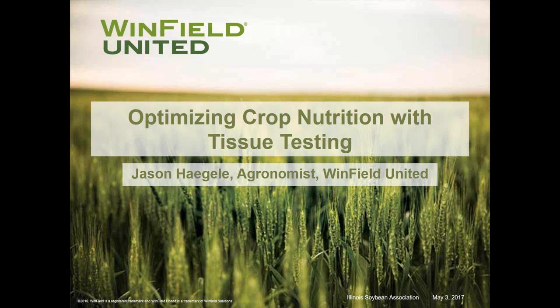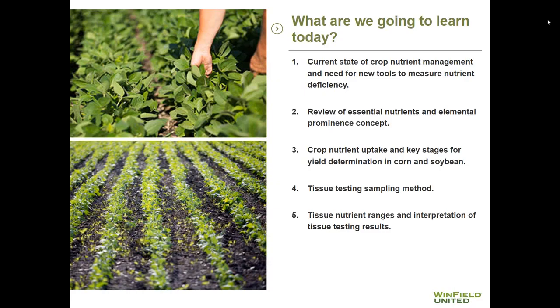We're going to review essential nutrients and the elemental prominence concept — looking at those elements that are most important to corn and soybeans at specific growth stages. A third learning objective is to review crop nutrient uptake and key stages for yield determination in corn and soybean. We'll dive into tissue testing sampling methods, and then we'll look at tissue nutrient ranges and the interpretation of tissue testing results.